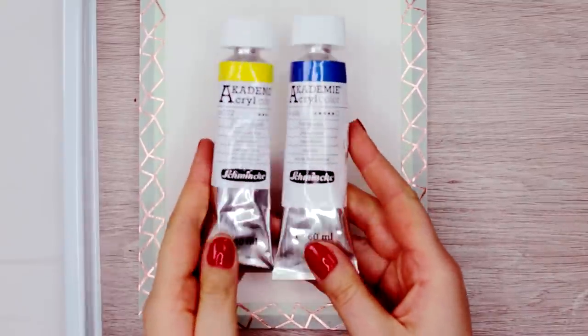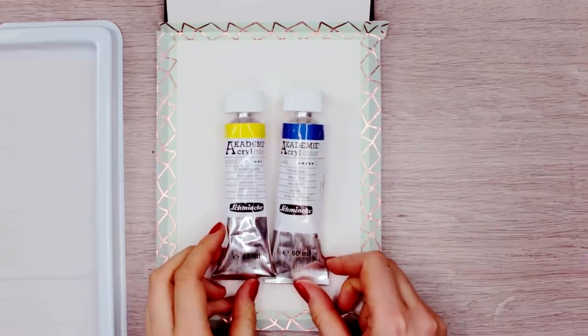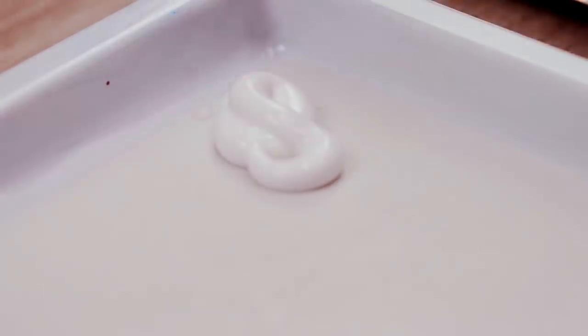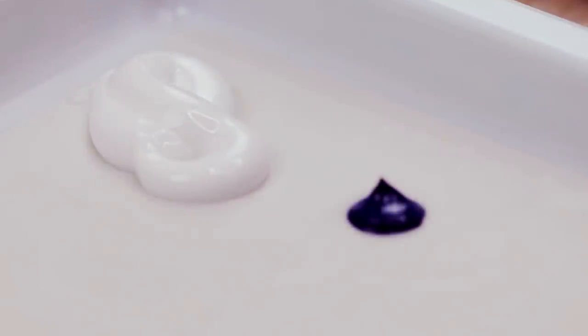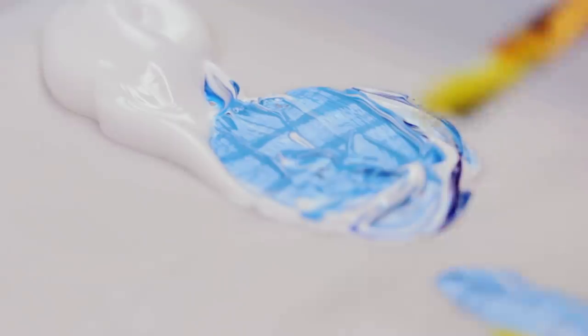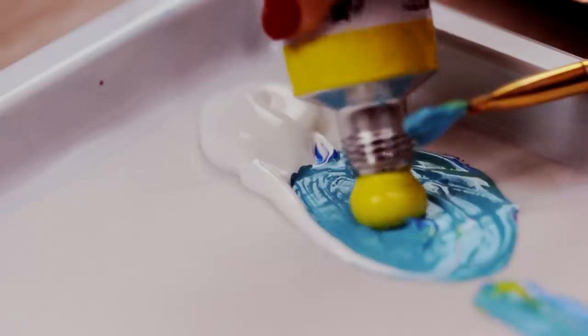Now to create the bright green shades, I'm going to use a lemon yellow, phthalo blue, and titanium white. Start off by mixing a few different shades of green. Here, I first mixed the blue with the white paint and then added as much yellow as I needed to the mixture until I was happy with the shade.